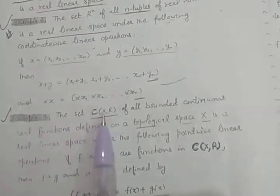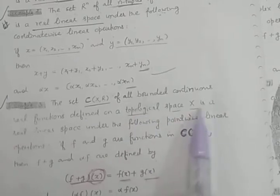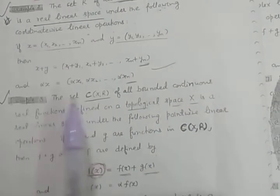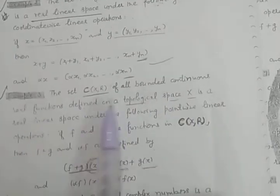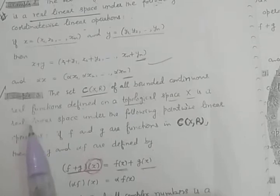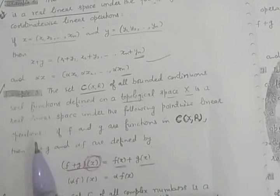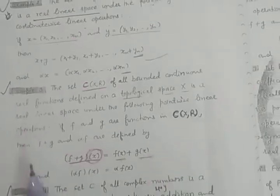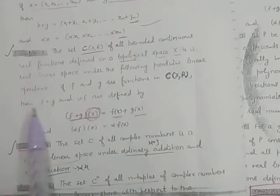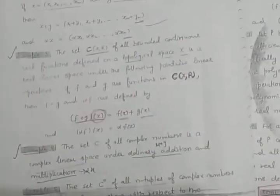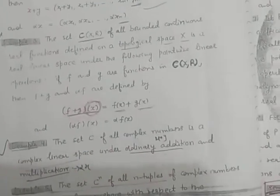Third example: The set C(X, R) of all bounded continuous real functions defined on a topological space X is a real linear space under the pointwise linear operations. If f and g are functions in C(X, R), then (f + g)(x) = f(x) + g(x) and (alpha·f)(x) = alpha·f(x).